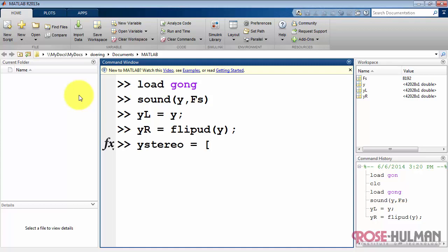Now the stereo signal is created as a something by two array. In this case I provide the left channel audio which is a one-dimensional array, the right channel also one-dimensional, and we end up with the something by two dimensional array.